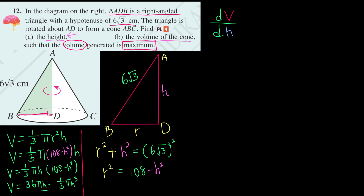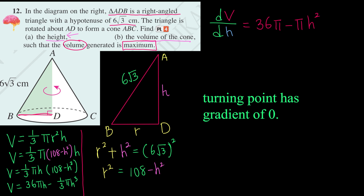Now we are safe to differentiate with respect to h. Differentiating: dV/dh = 36π − πh², since the power of h³ reduces by 1 and 3 × 1/3 = 1. To find minimum or maximum, we need to find the turning point, so we set dV/dh = 0.